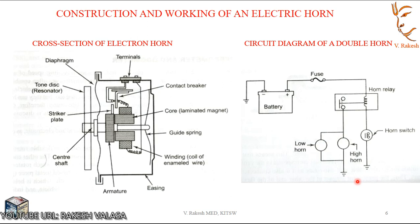Most automobiles, instead of a single horn, use double horns. The frequency of these horns is adjusted to a certain musical interval so that the sound produced by two horns is of good quality. The horn having lower frequency is called the low tone horn, and the one with higher frequency is called the high tone horn.